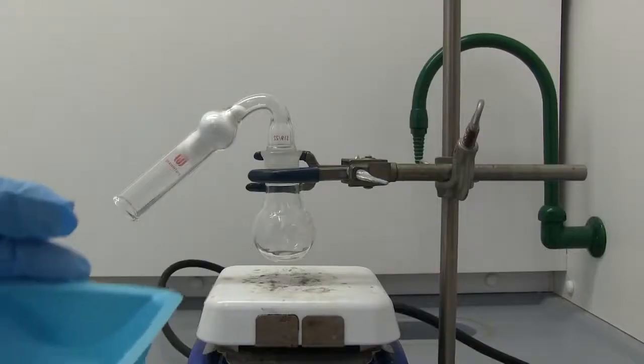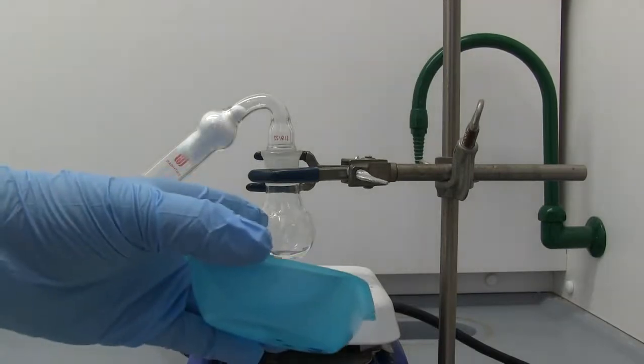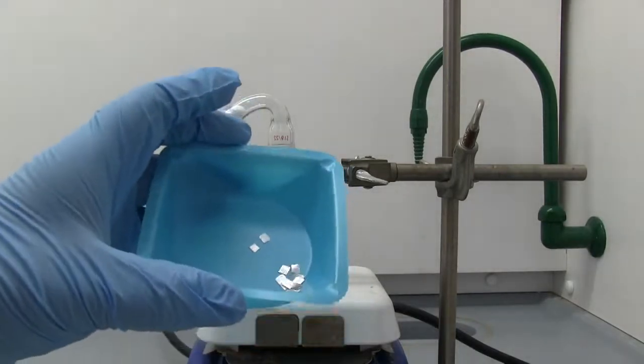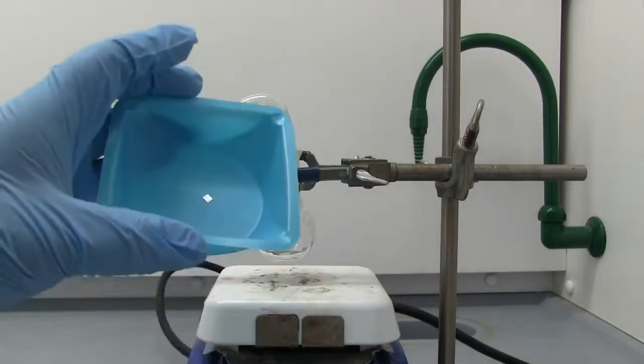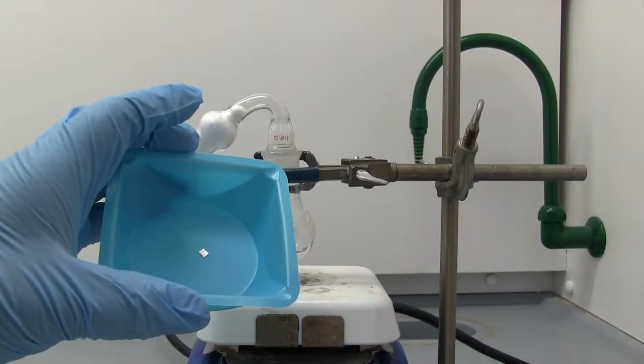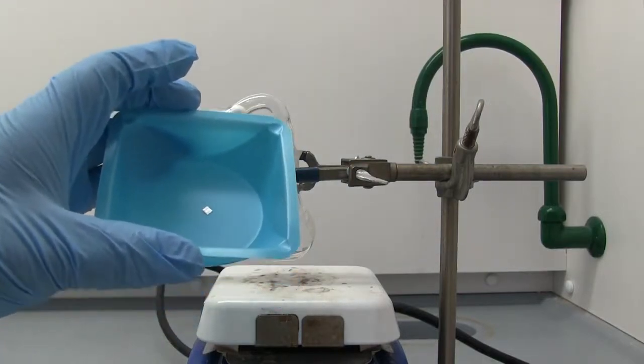All right, so I had to restart the experiment. It's a new flask, same drying tube. I cut up some new and cleaned some new magnesium. This time it was 97 milligrams after being cleaned. But everything else is going to remain the same. And I'll join you when we get the methyl iodide in.